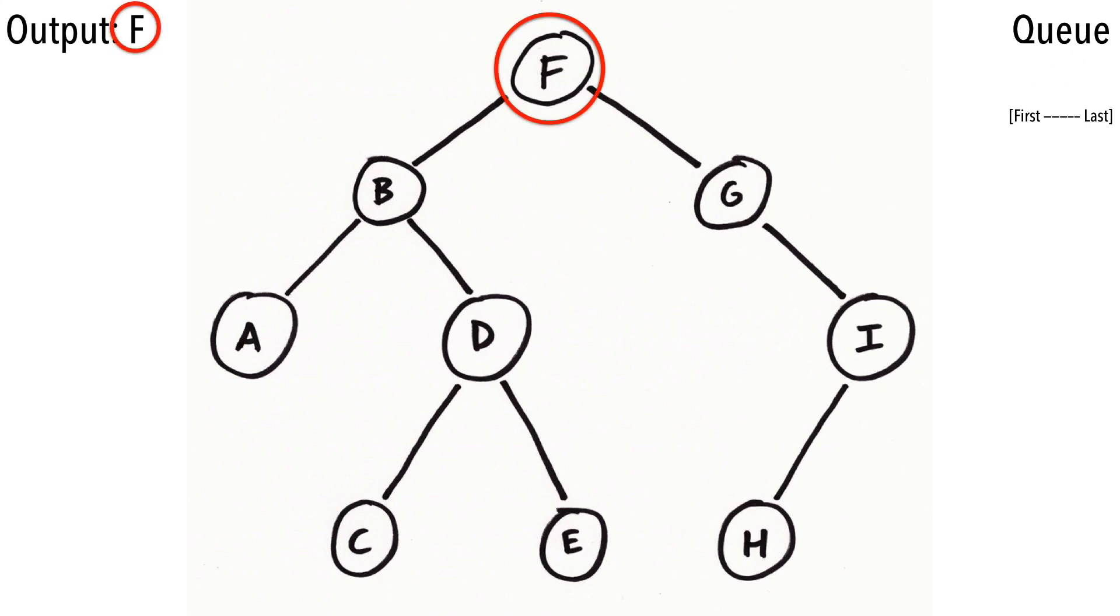Let's take F out of the queue and print its value. Next, we'll add its left child, B, followed by its right child, G, to the queue.